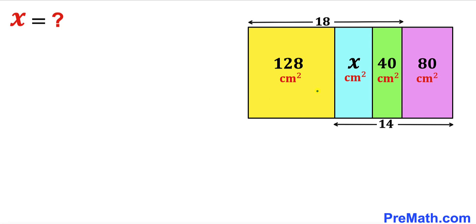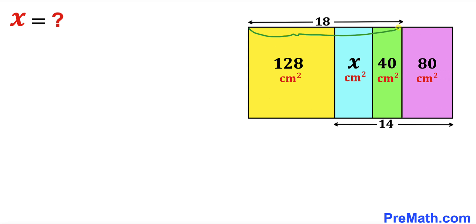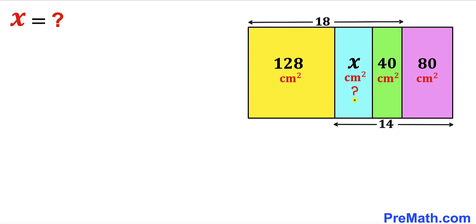Welcome to pre-math. In this video we have four rectangles fully confined in a big rectangle. The area of the yellow rectangle is 128 cm², the area of the green rectangle is 40 cm², and the area of the purple rectangle is 80 cm². The upper horizontal distance is 18 cm and the lower horizontal distance is 14 cm. We are going to calculate the area of the blue shaded rectangle, represented by x.